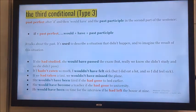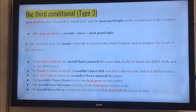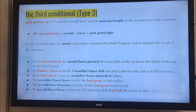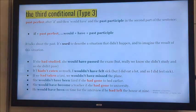What about type 3? The formula says that after 'if' we use past perfect, and in the second clause we use 'would have' and past participle. So it talks about the past in general — it's used to describe a situation that didn't happen, but we're imagining the result. What if it had been true?